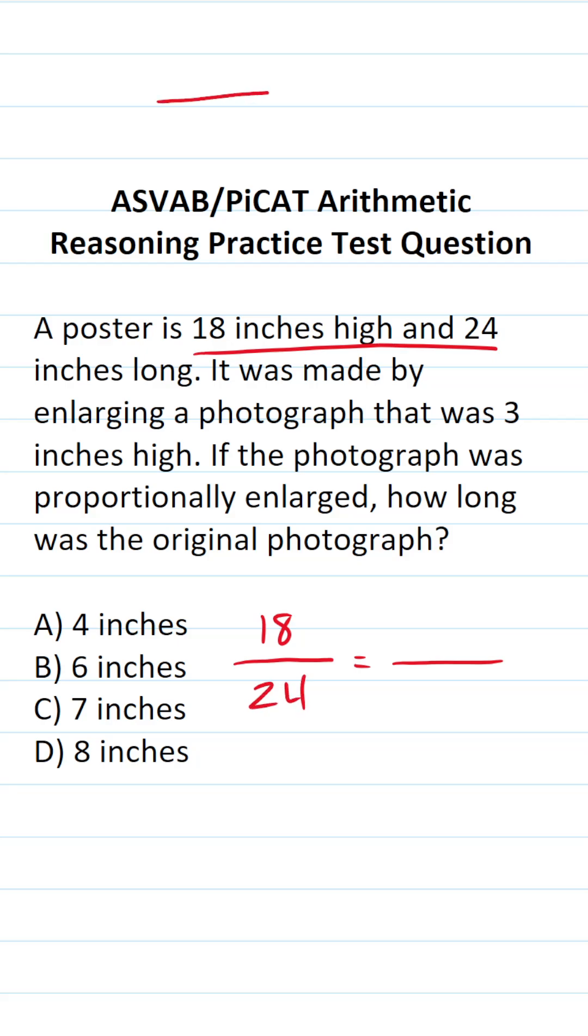I want you to pay close attention to how I fill that in. We have height in our numerator over length in our denominator. So as I fill in the right-hand side of the equal sign, I'm going to keep this the same. We know the photograph was 3 inches high, so I'm going to put that 3 inches in my numerator. And we don't know its length, so we'll call that x.